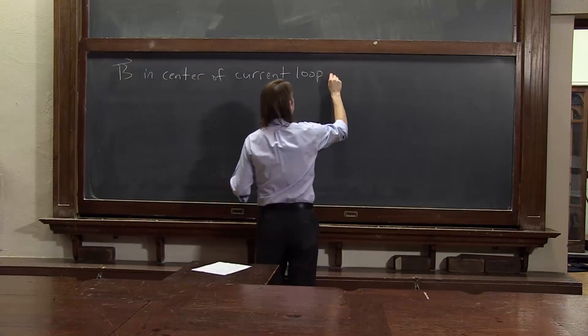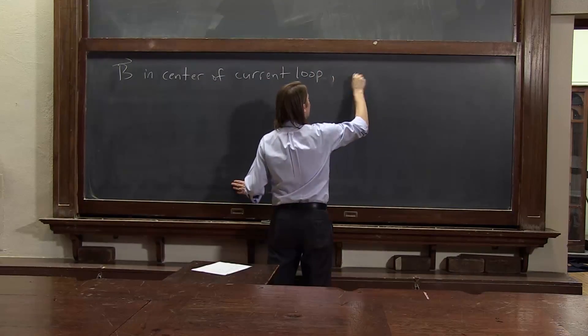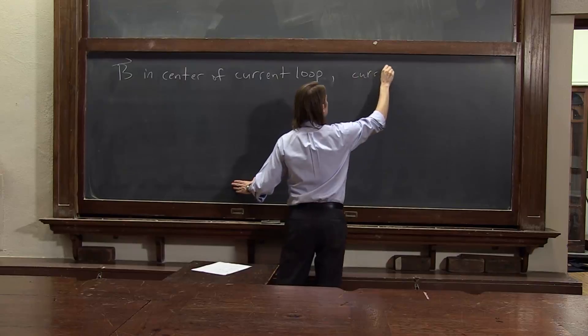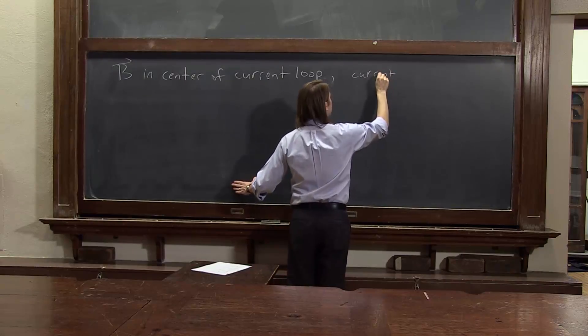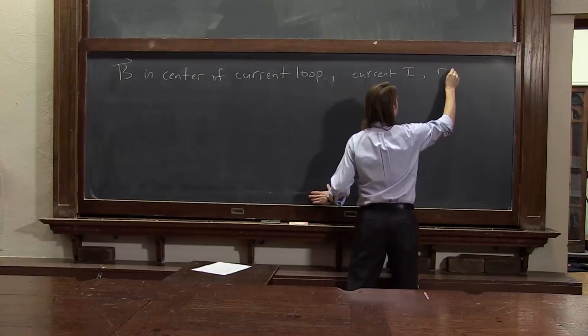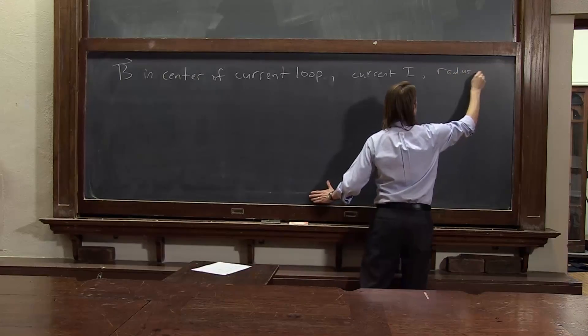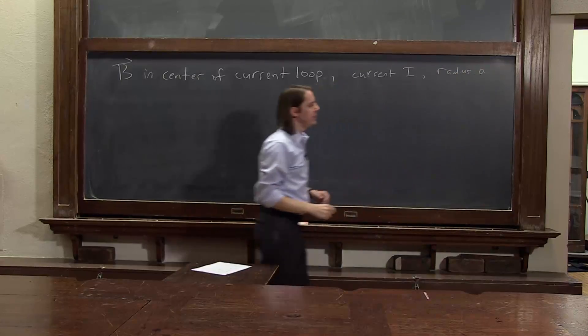And for our loop, we'll assume a current I, current I and radius A, just at the center.